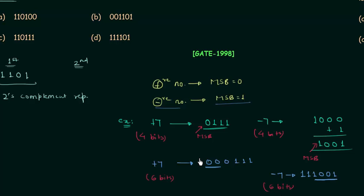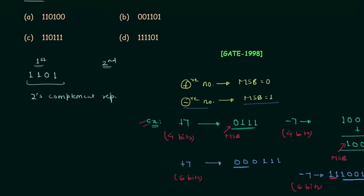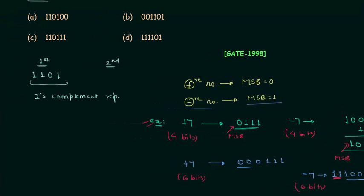Now what is the conclusion we have drawn from this example? In case of 2's complement representation, we can add as many sign bits as we want.